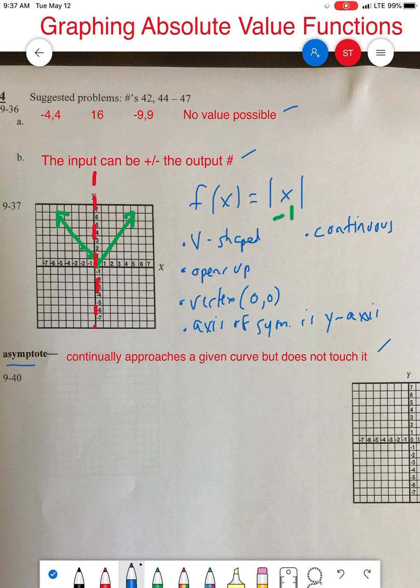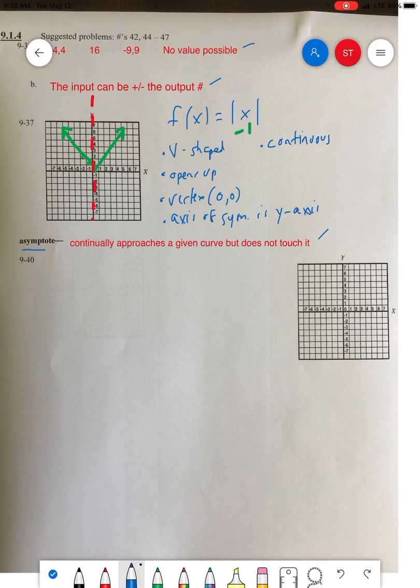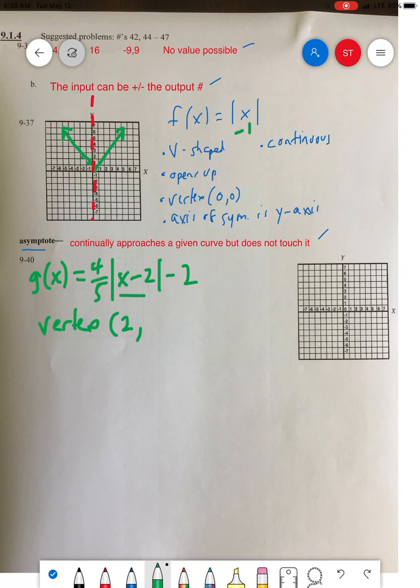Now let's do problem 40. We're going to graph g(x) equals 4/5 times the absolute value of x minus 2, minus 2. Don't panic—we don't even need a t-chart. We can find the vertex. Remember what makes this zero? The vertex is (2, -2).